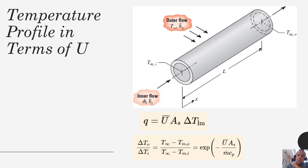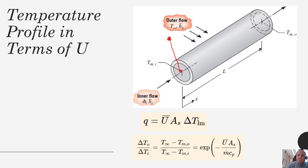If we want to know how energy gets from the outside fluid through the outer pipe wall and then to the inner fluid, we need to consider heat transfer through all three of those media in series. This leads us to express Q in terms of the overall heat transfer coefficient U — the same equation developed previously, except H is replaced by U — as U times the total surface area of the pipe times the log mean temperature difference.